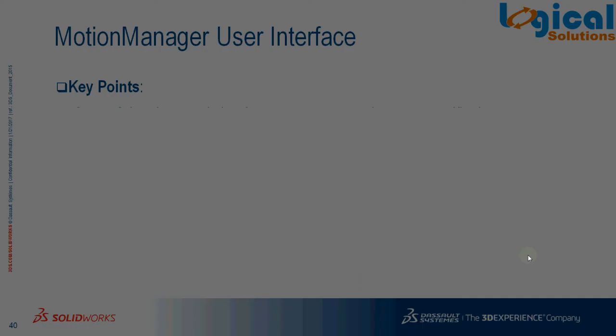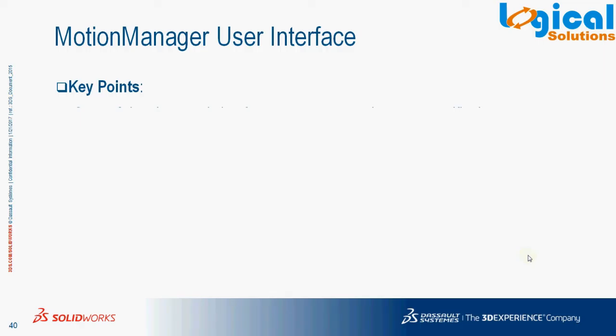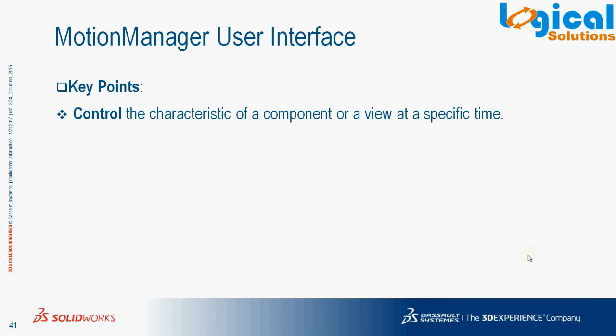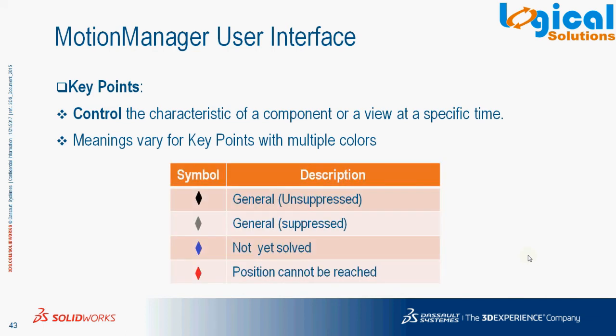Next, Key Points. Key points are used to control the characteristics of a component or view at a specific point. The color of the key points varies and each color has a specific meaning, as shown. The different color key points have different meanings, which will be explained in detail in coming tutorials on animation.